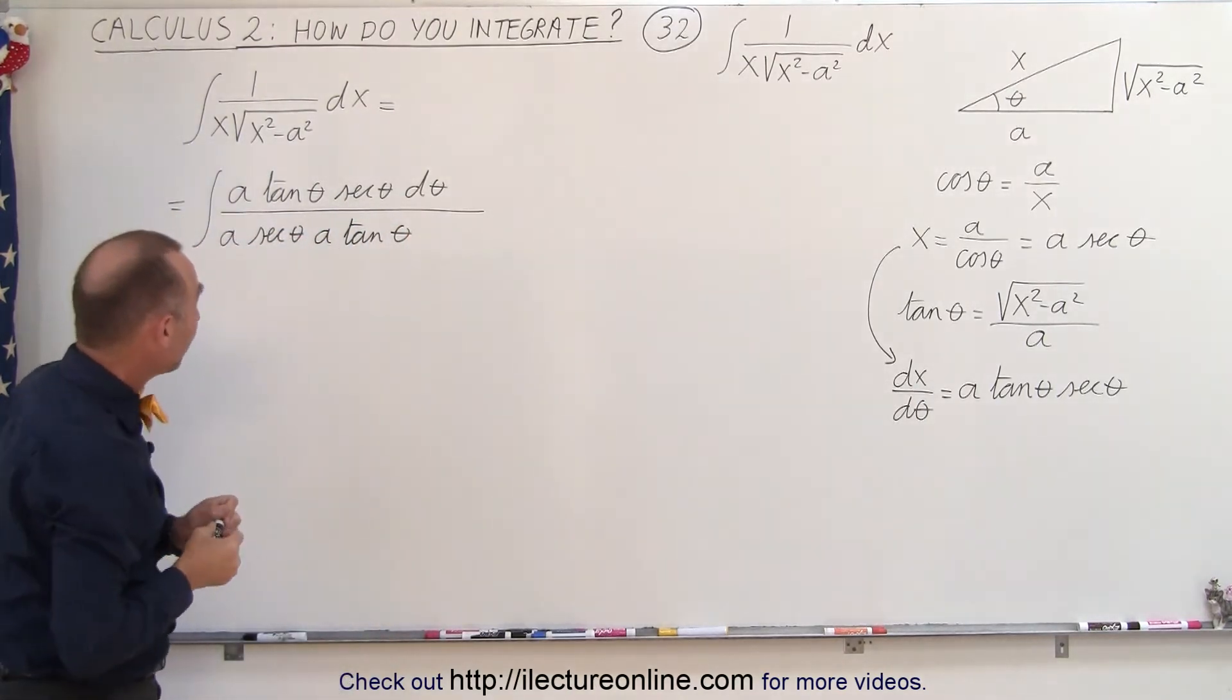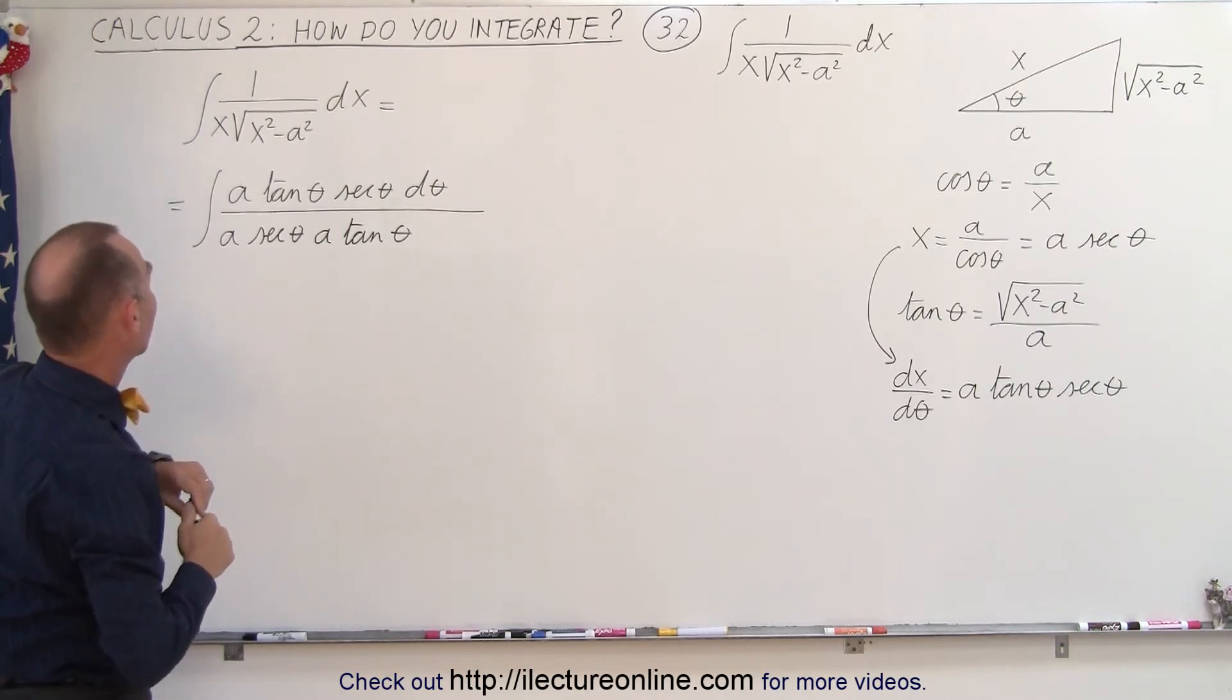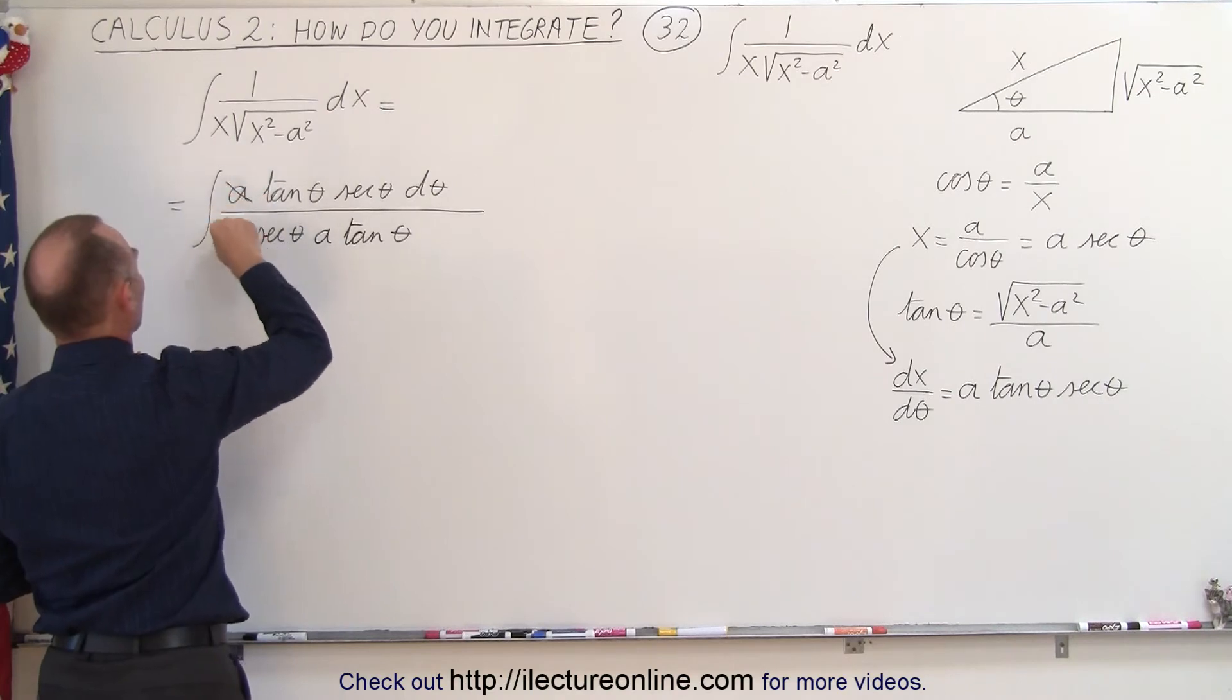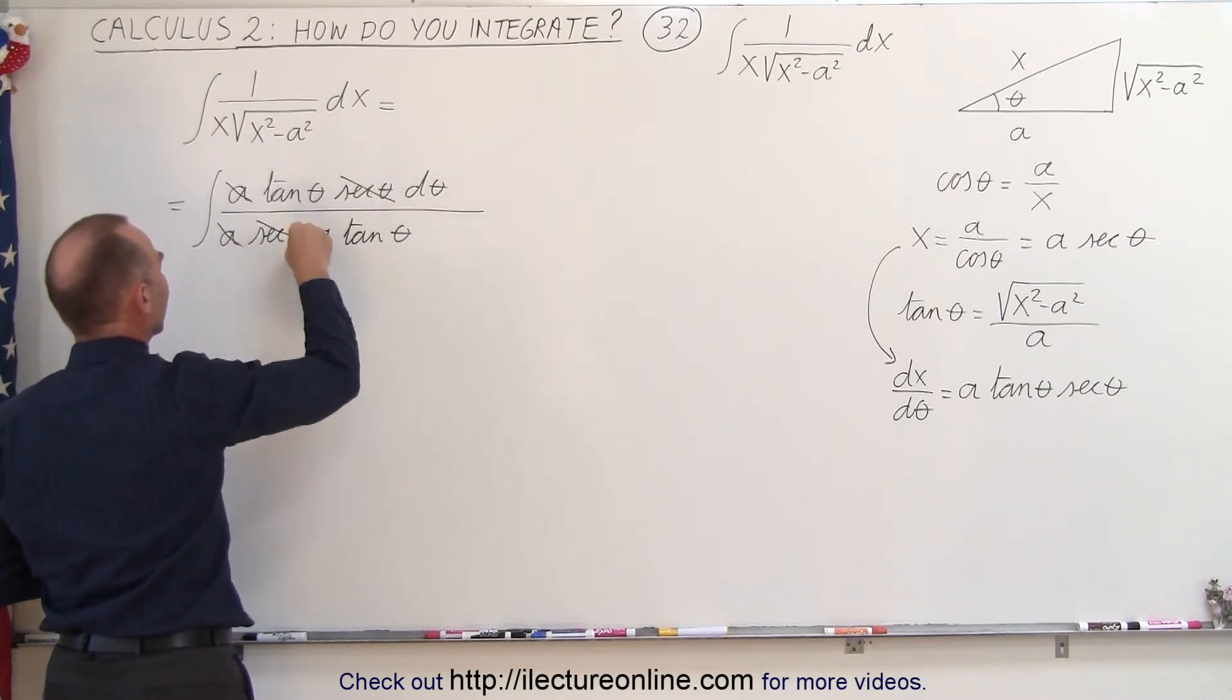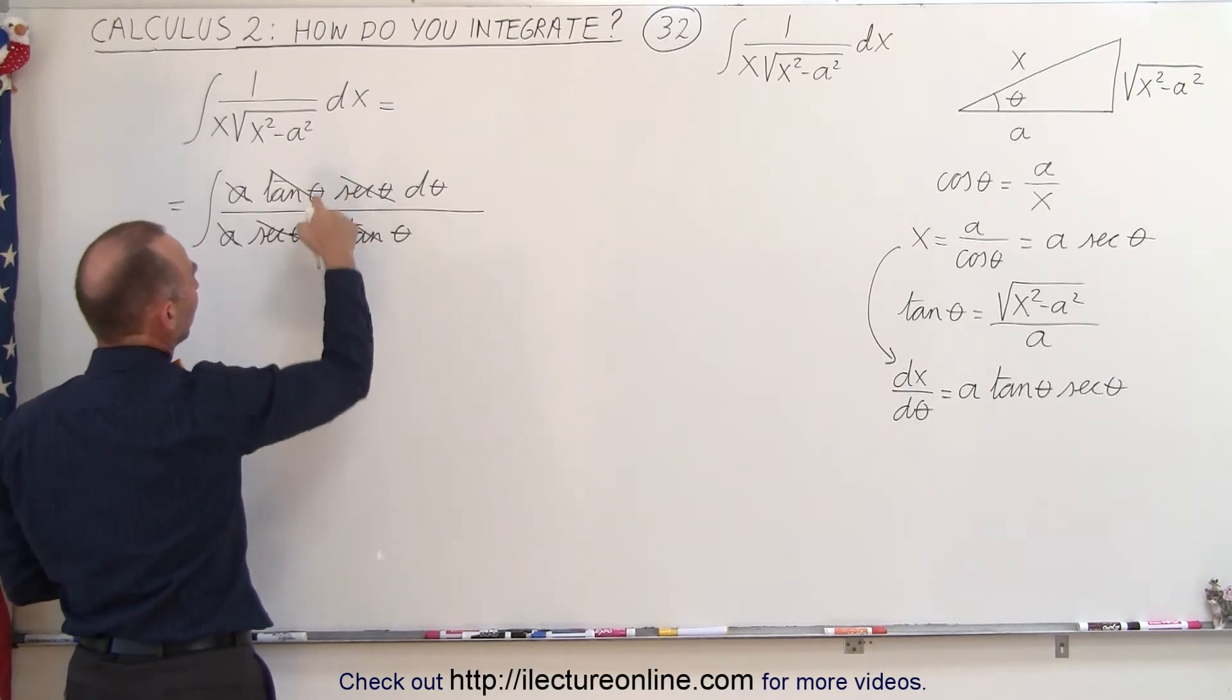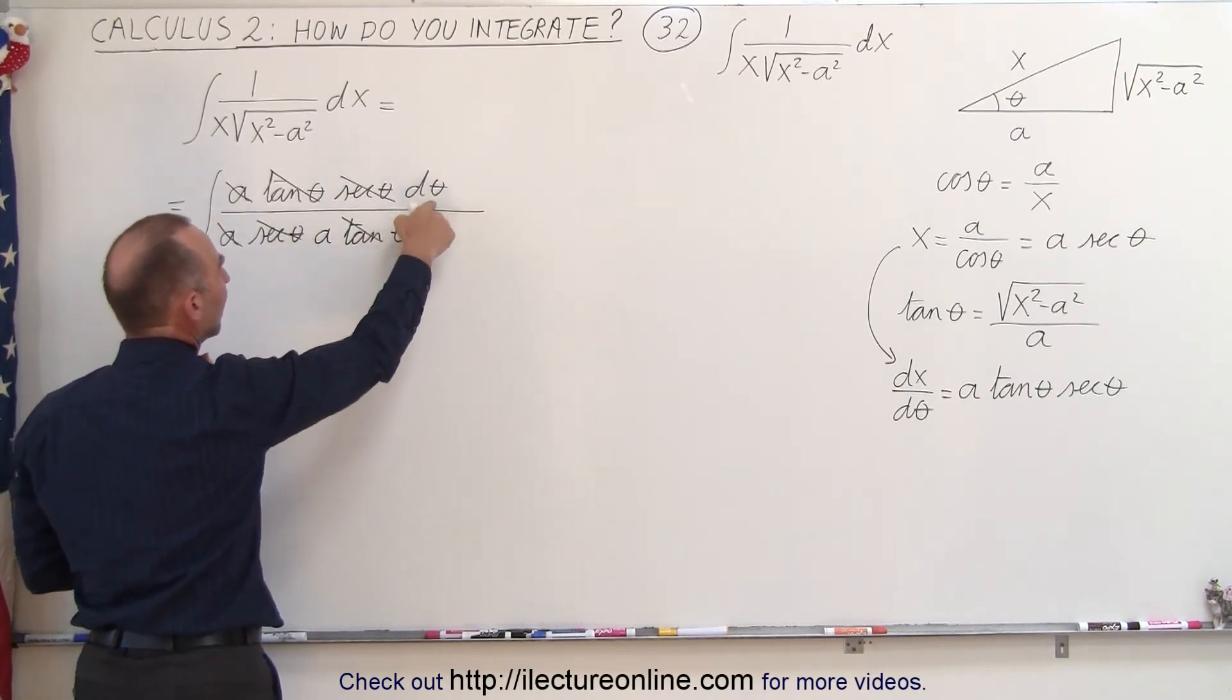Now when we take a look at it, a pleasant surprise. First of all, we have an a and an a that cancels out. We have a secant of theta, secant of theta comes out, and a tangent and a tangent. And all we have left is 1 over a times d theta.